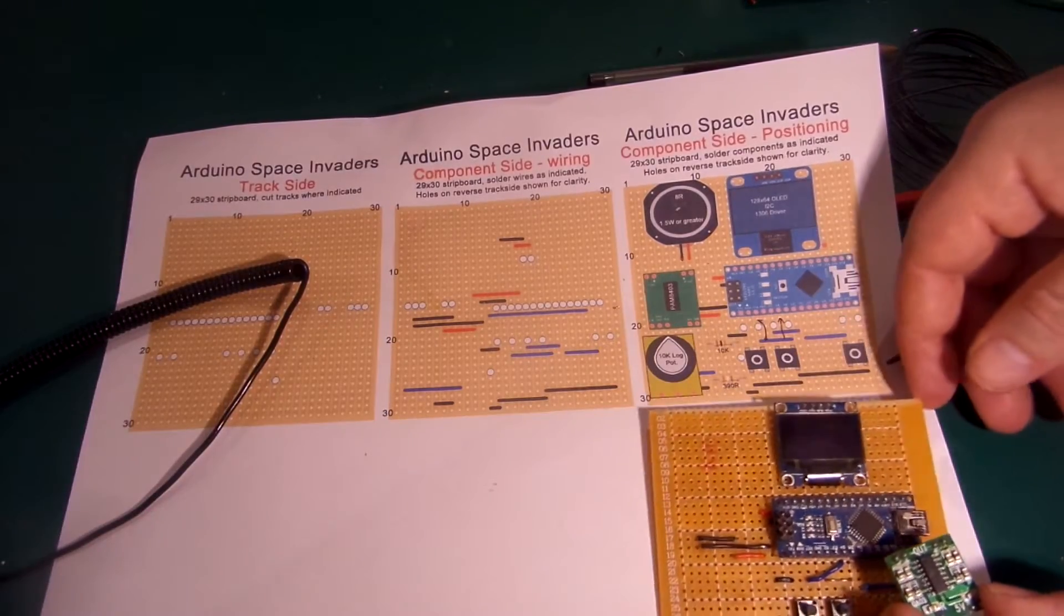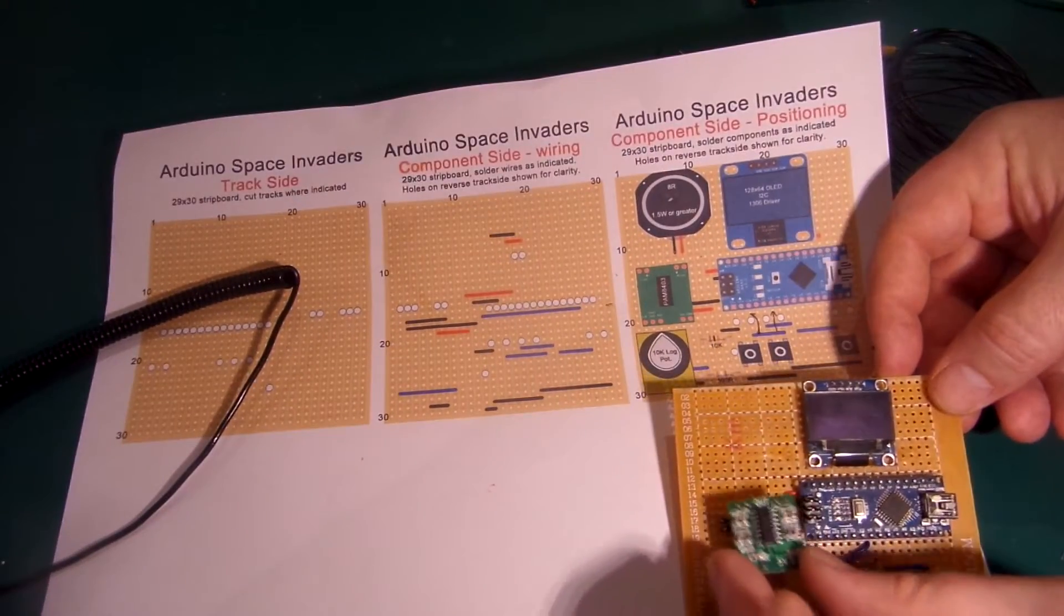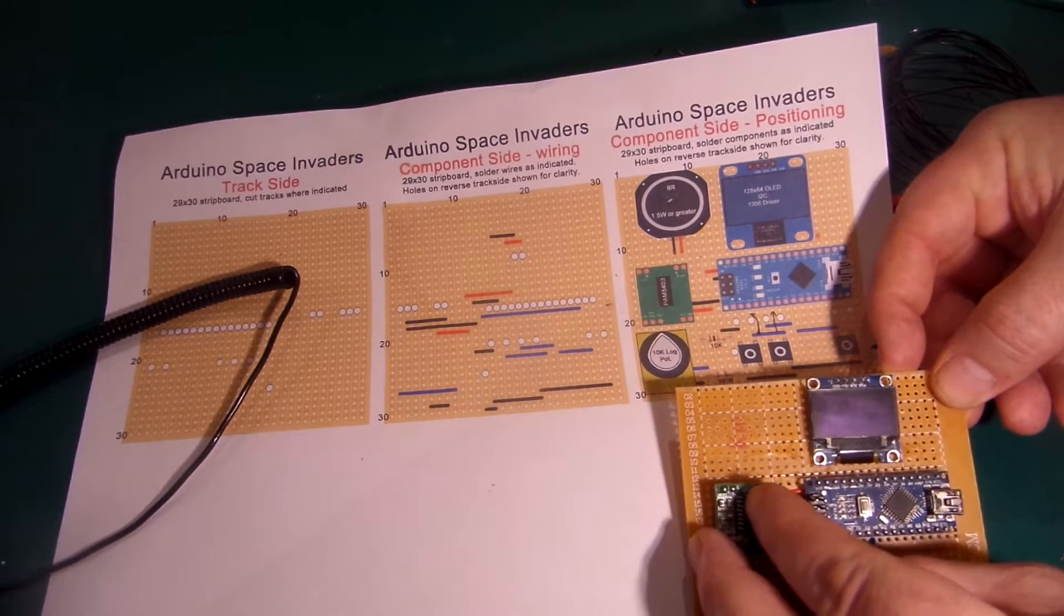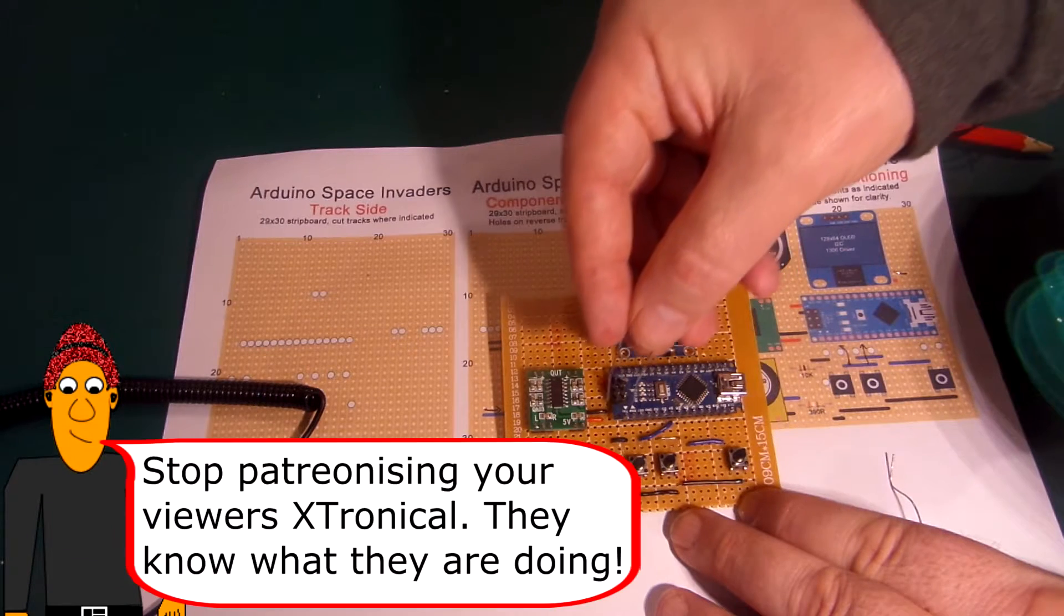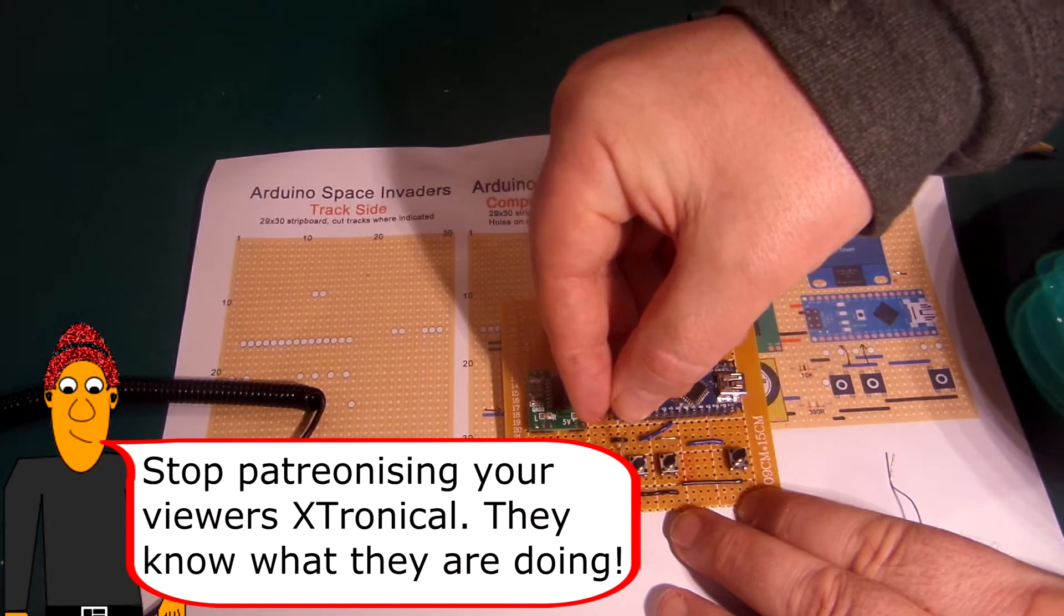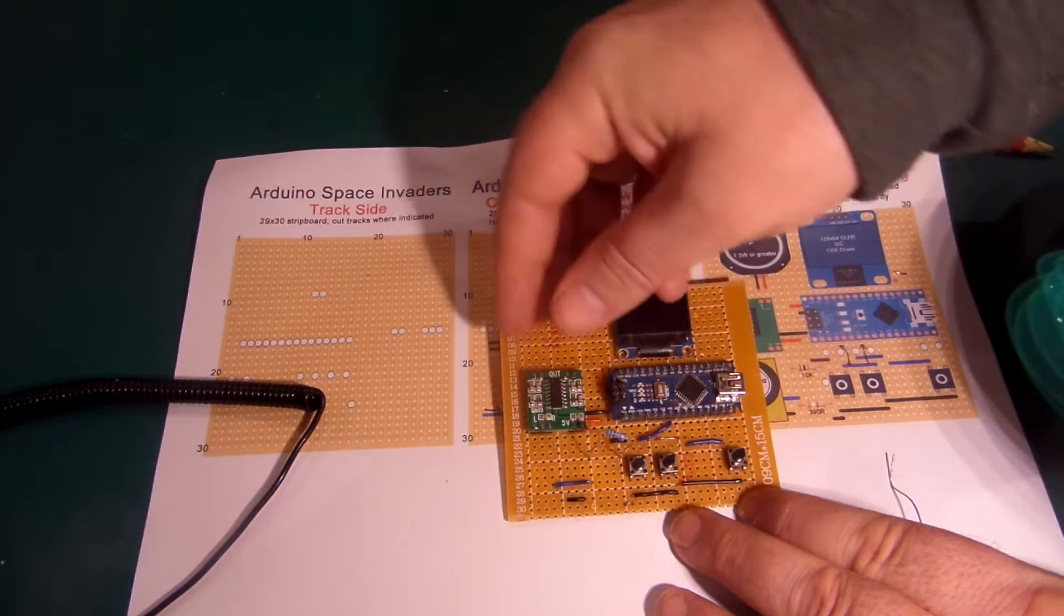Let's add the sound next, starting with the PAM 8403 audio amplifier module. Then the resistors, taking care as I need to keep telling you, to put the right values in the right place as else things aren't going to quite work correctly.